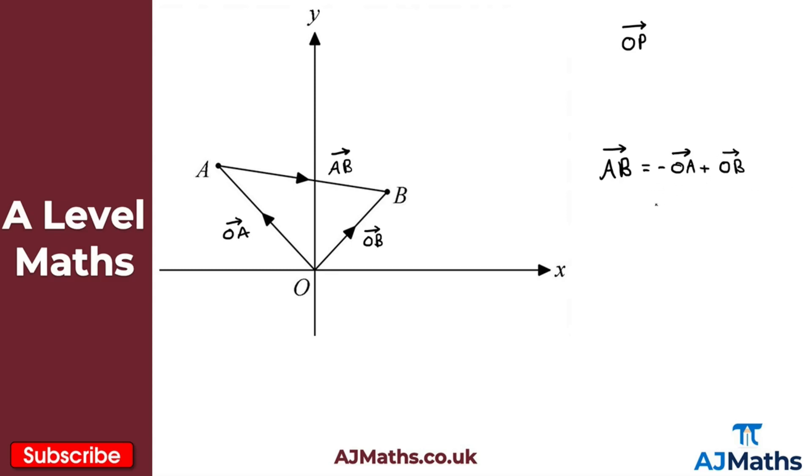Now there's a nice way of writing this. We'd write this as the vector OB and then subtract the vector OA. There we have it, that would be the vector AB defined using those position vectors.